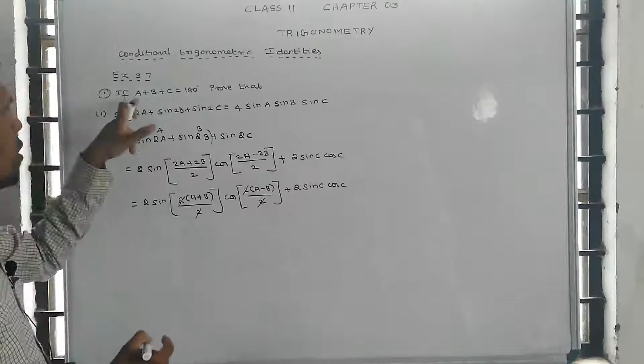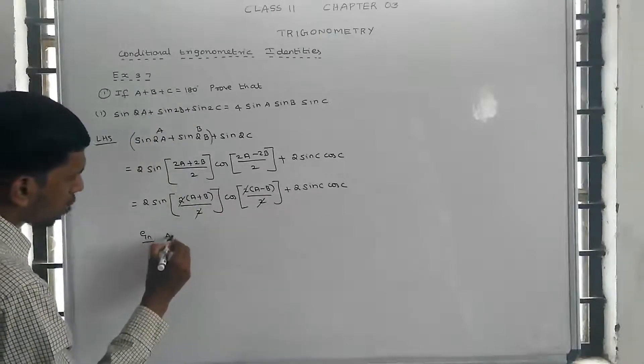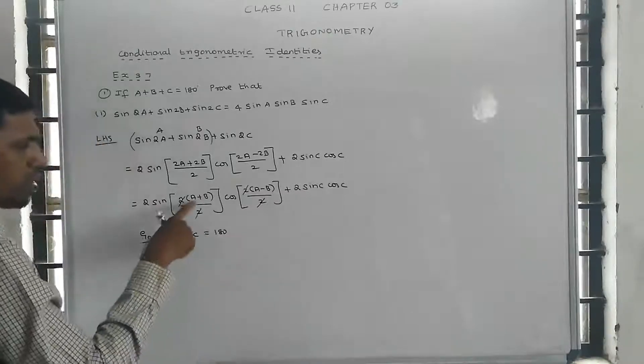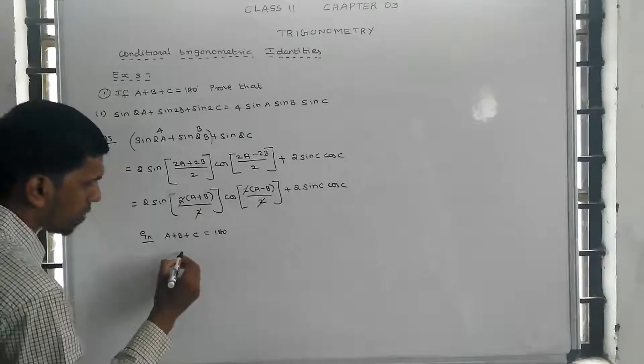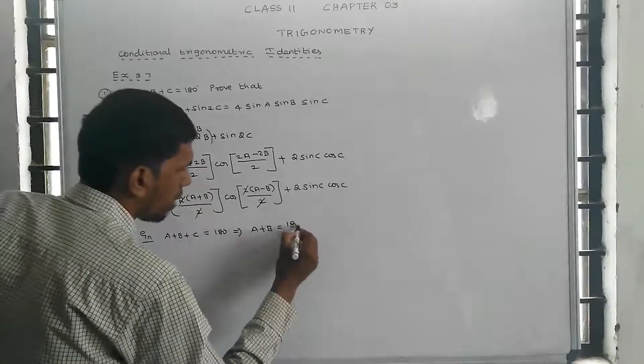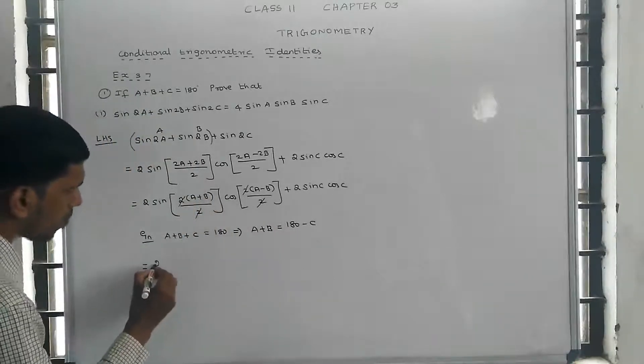Now we use the given condition: a + b + c = 180 degrees. Therefore, a + b = 180 - c.